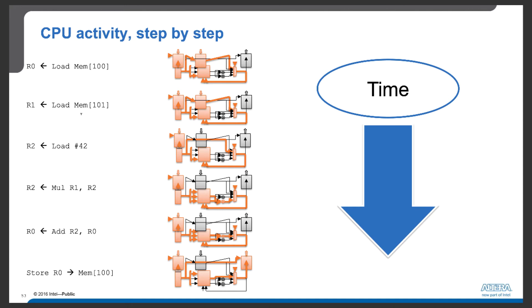Similarly, the next instruction is another load instruction. In this case, we load data from address 101 and put the result into R1. The same functional units are used: the instruction register, the load unit, the ALU, and then the register file. Eventually, the data from memory location 101 is loaded into register R1.